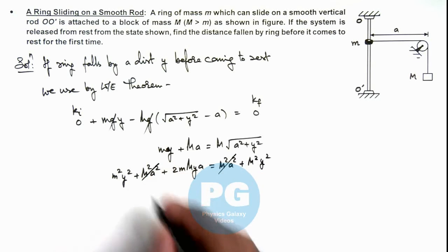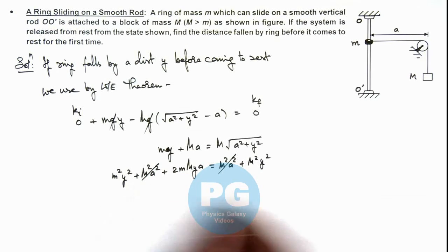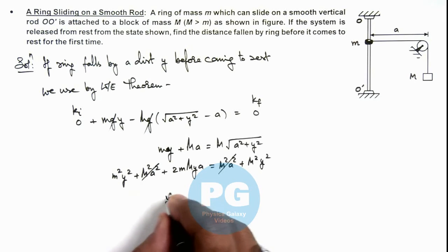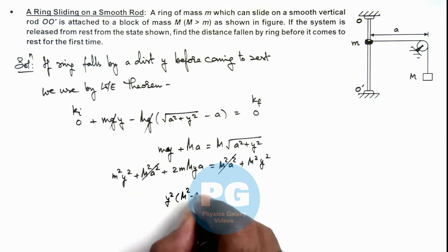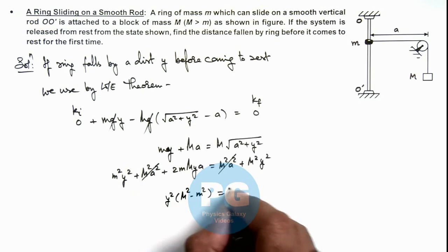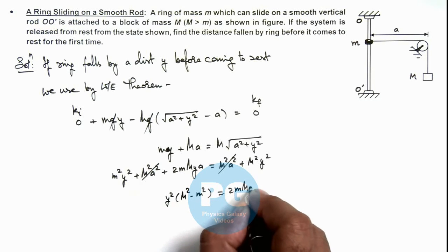Here M square ay square gets cancelled out. And if this term can be taken on the other side this will be y square M square minus m square is equal to 2 m M y ay.